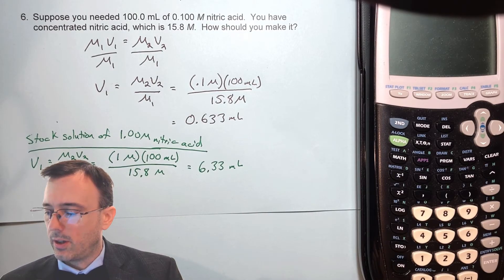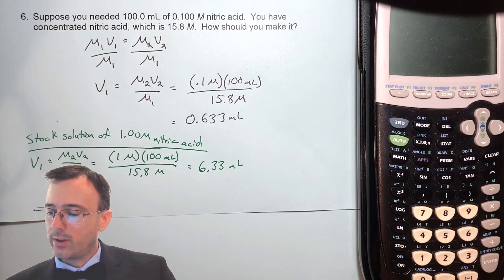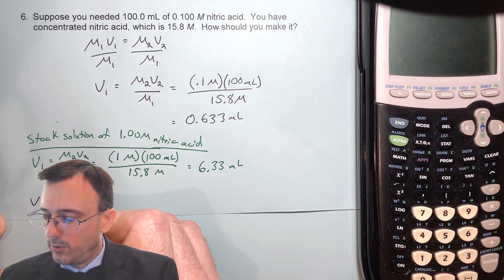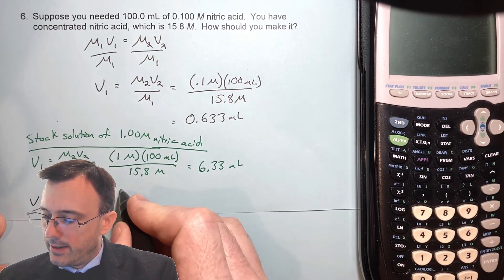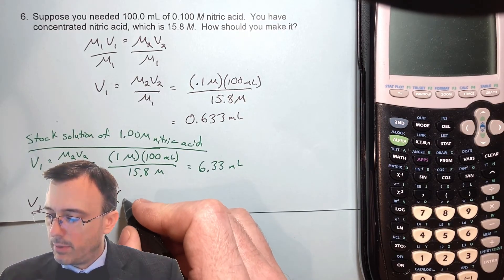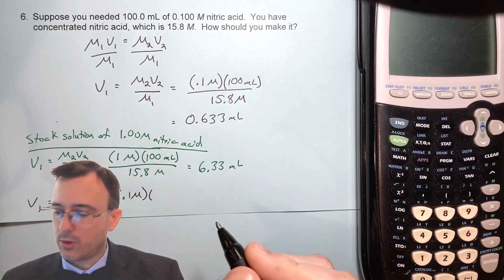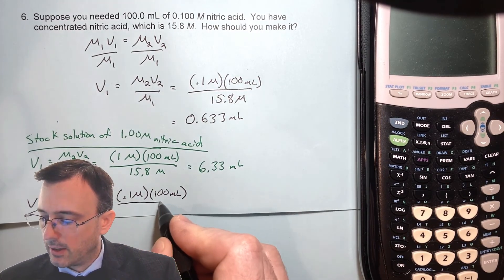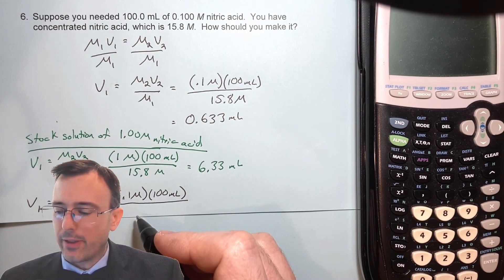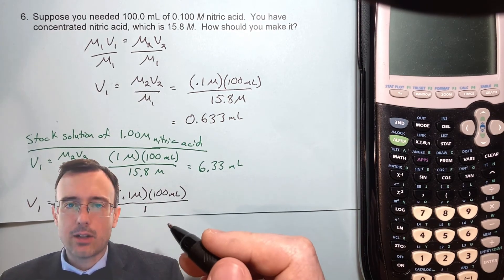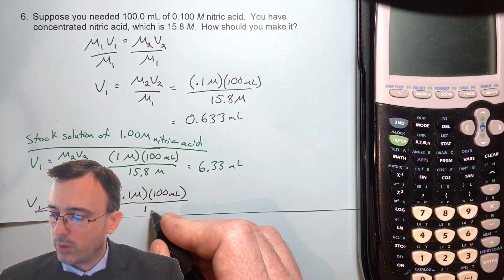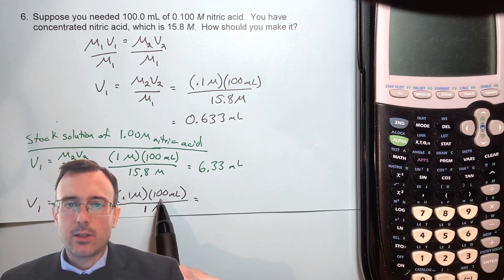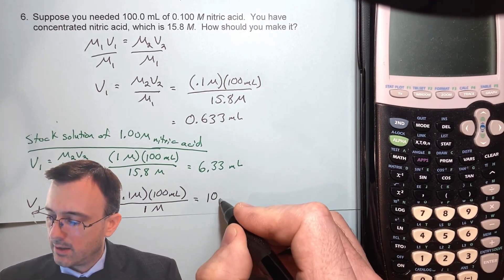We still need to do a second dilution in addition to that. Once we have the stock solution, we solve for another V1: V1 equals M2V2 over M1. Our new M2 is 0.1 molar, we'll put everything into a 100 milliliter volumetric flask, and our M1 is now 1 molar. So that's 0.1 times 100 divided by 1, which is just 10 milliliters.